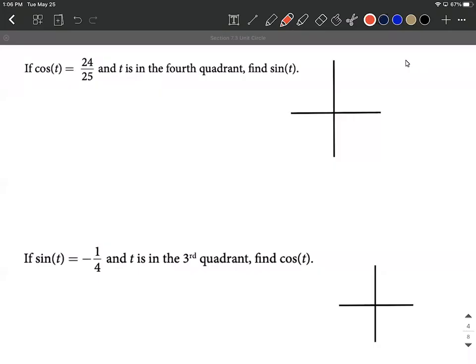On these two problems, we're given either cosine or sine and also the quadrant where our angle fits into, and we're asked to find the other one. So on this first one, we know cosine of t is 24/25, and t is going to be in the fourth quadrant, which is important. Our goal is to find sine of t.